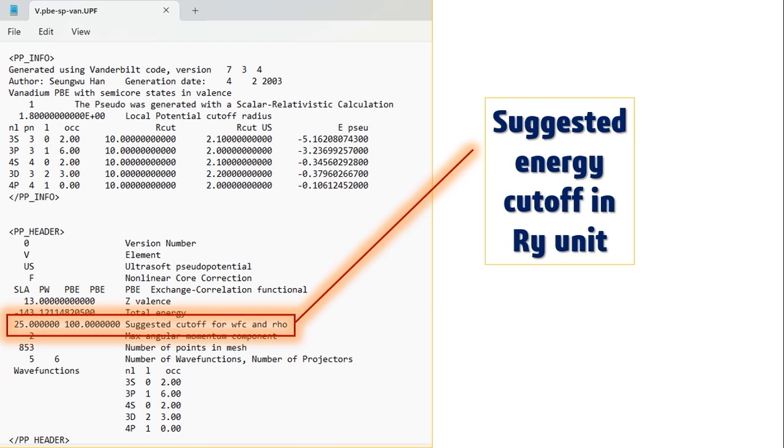For example, I am opening a pseudopotential file for UC here. Minimum ecutrho and minimum ecutwfc is clearly mentioned for that particular atom. Similarly, for all other pseudopotential files, there remains the suggested cutoffs that should be used in the calculations.